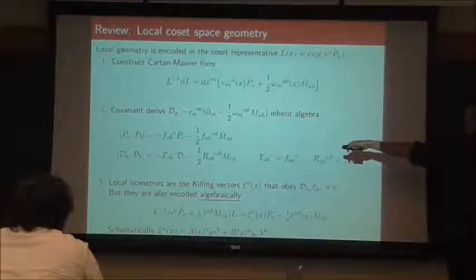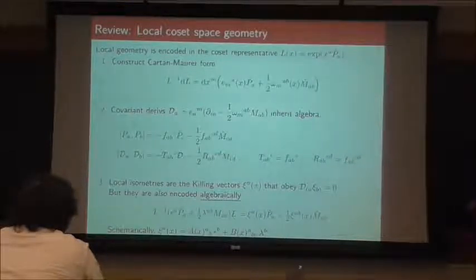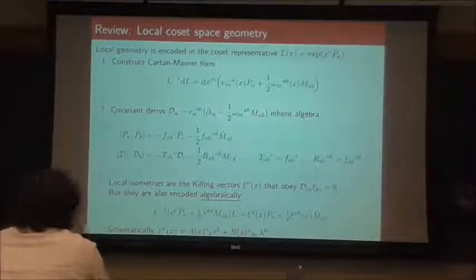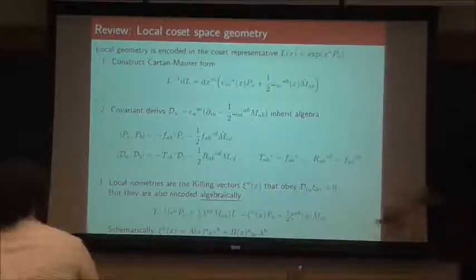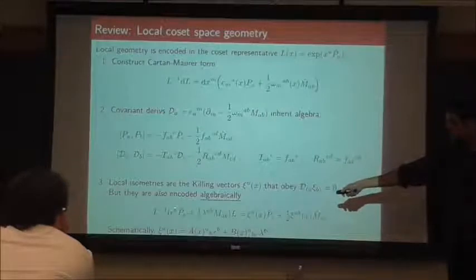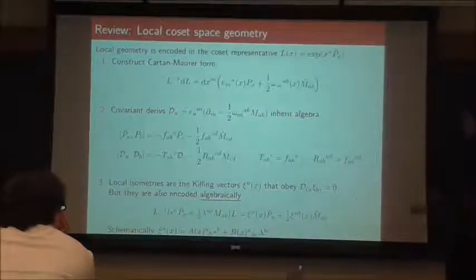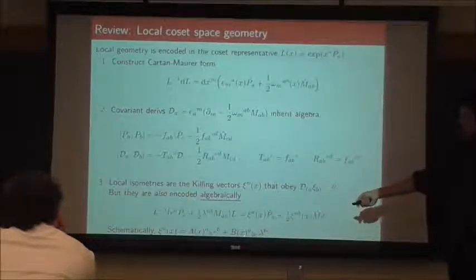The covariant derivatives constructed in the standard way out of the vielbein and spin connection automatically inherit the algebra that the P's and M's obeyed. So if P with P gives structure constants times P and M, you can show the covariant derivatives have a torsion tensor and Riemann tensor which are precisely those structure constants. And things that are maybe quite difficult to calculate given a generic vielbein and spin connection — for example, finding Killing vectors — turn out to be encoded algebraically in the structure.